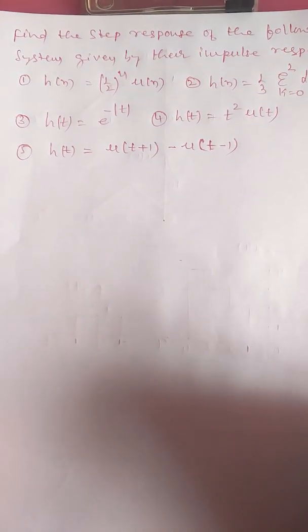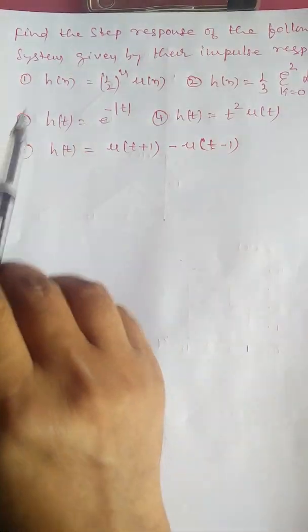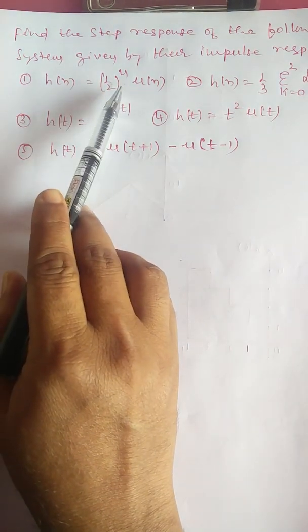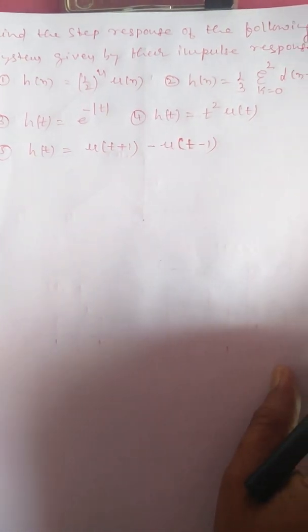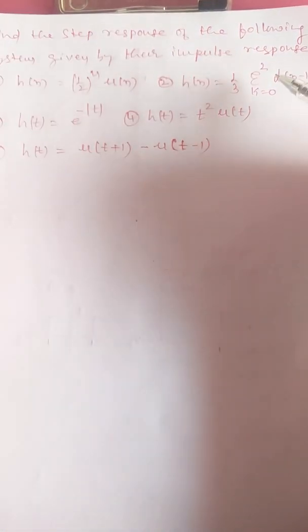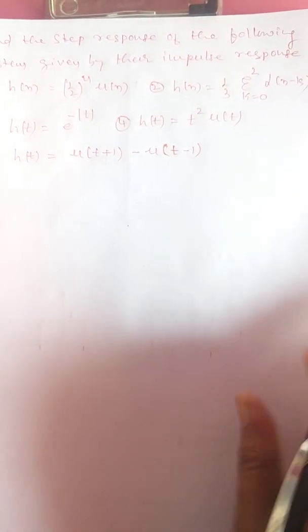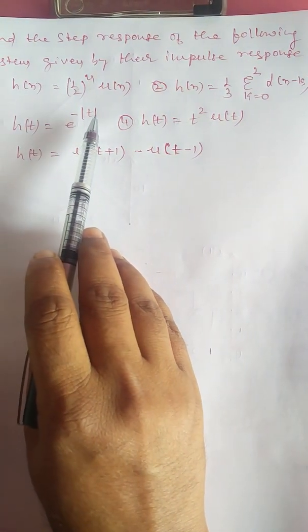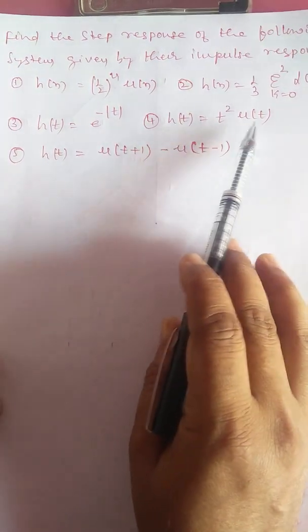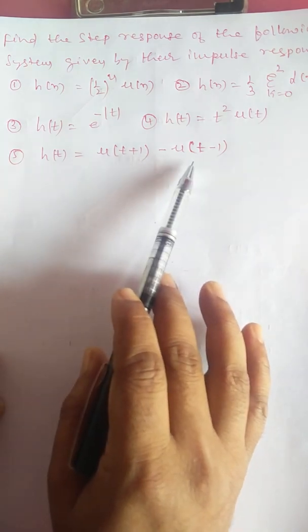Let us solve problems on finding the step response of the following systems given by their impulse response. The first problem is h[n] = (1/2)^n · u[n]. The second problem is h[n] = (1/3) summation k from 0 to 2 of δ[n−k]. Next, h(t) = e^(−|t|), then h(t) = t²·u(t), and the fifth problem is h(t) = u(t+1) − u(t−1).